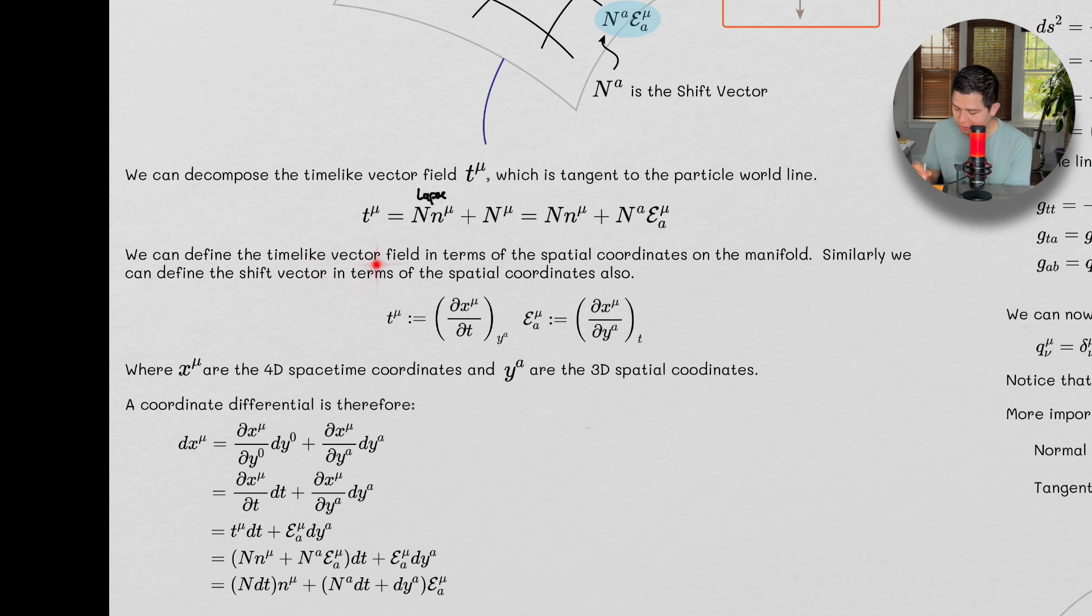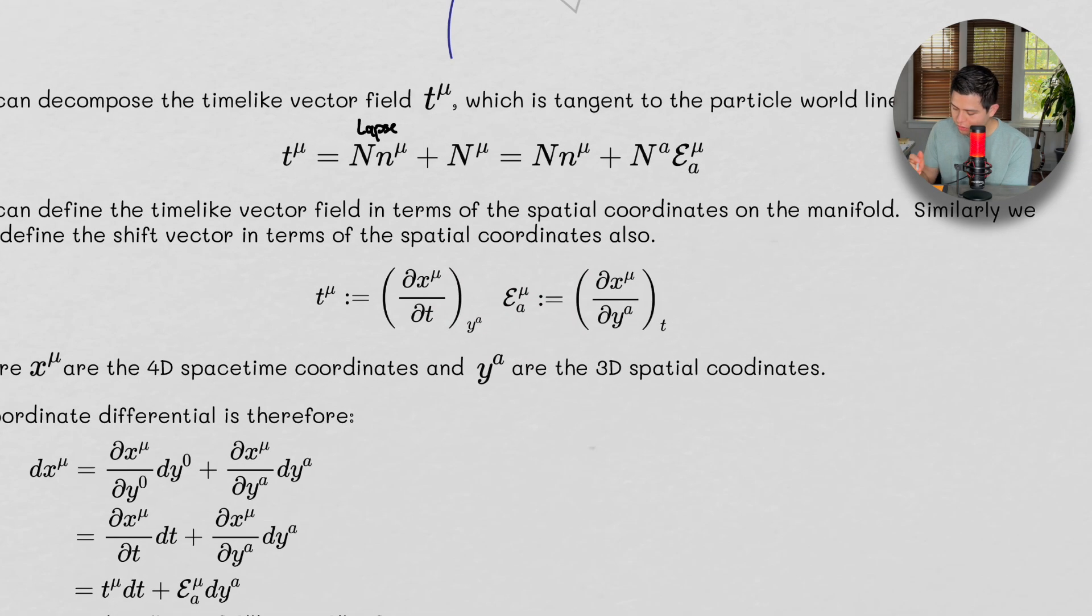We can define the time-like vector field in terms of the spatial coordinates on the manifold. Similarly, we can define the shift vector in terms of spatial components also. So this is where this thing comes into play, right? So we're doing this by definition. We're saying that T is tangent to the geodesic.